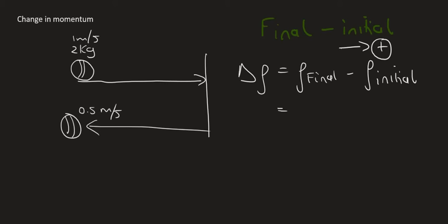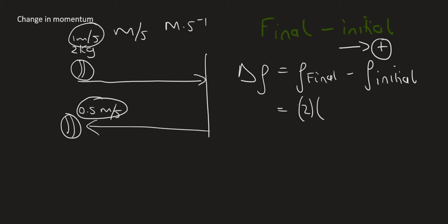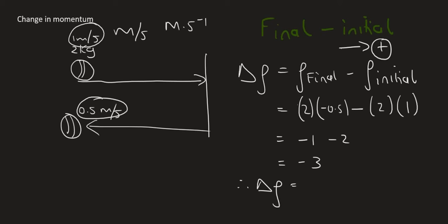The final momentum equals mass times velocity. The mass is 2 kg, and the final velocity is 0.5 meters per second to the left. Since we chose right as positive, that velocity becomes negative 0.5. Then we subtract the initial momentum: mass is 2, and the initial velocity is 1 meter per second to the right, so it stays positive. Calculating this gives minus 1 minus 2, which equals negative 3. So the change in momentum is positive 3 kg·m/s to the left.